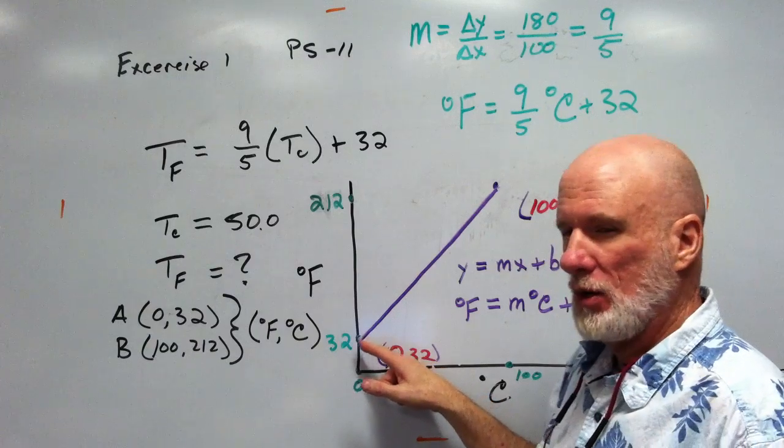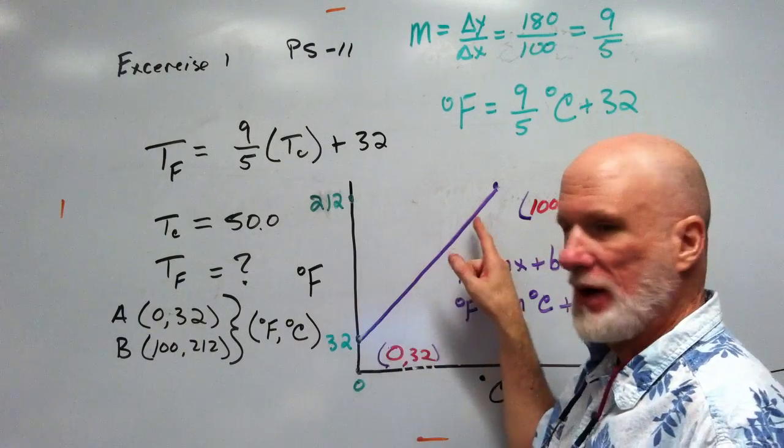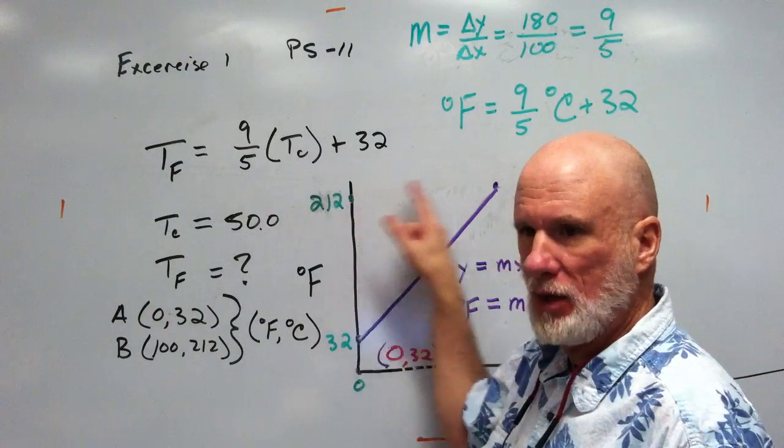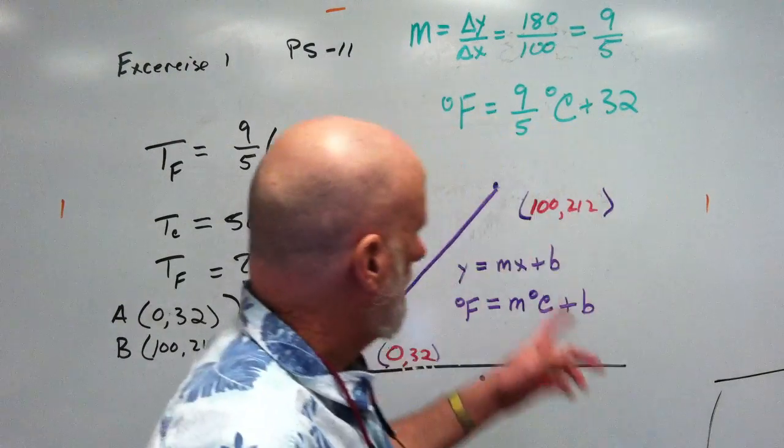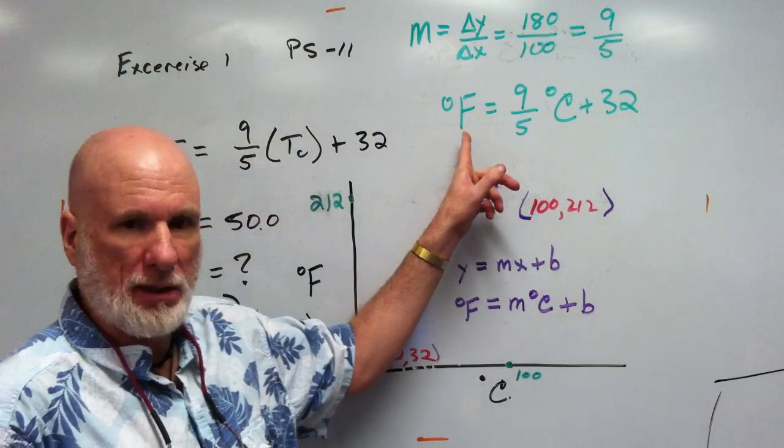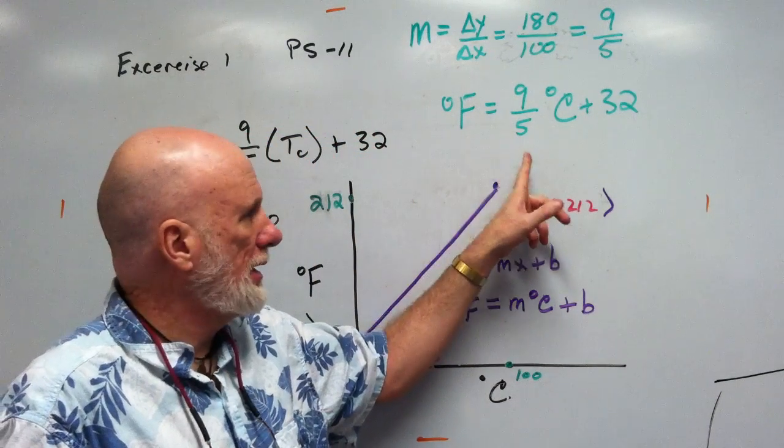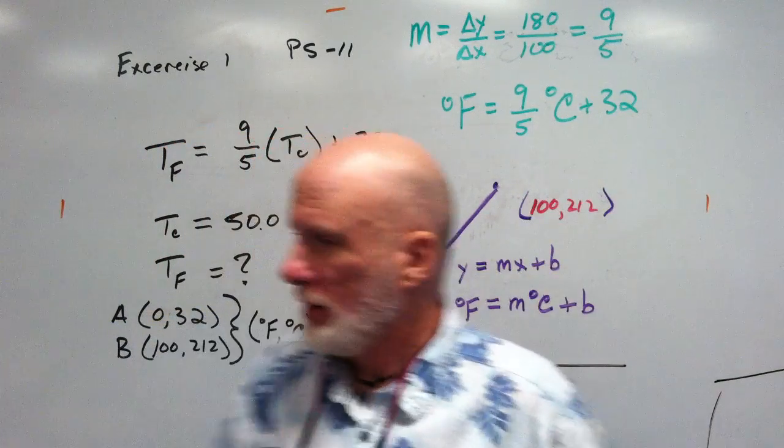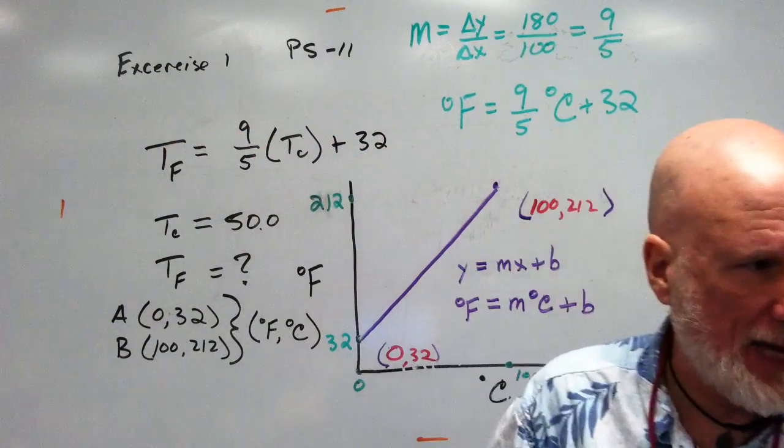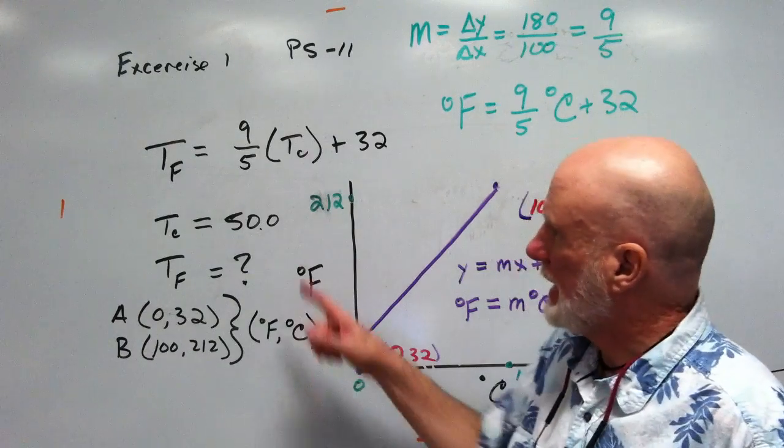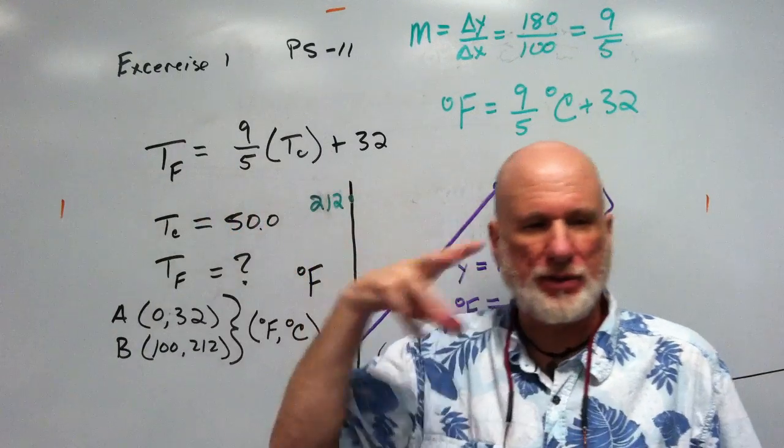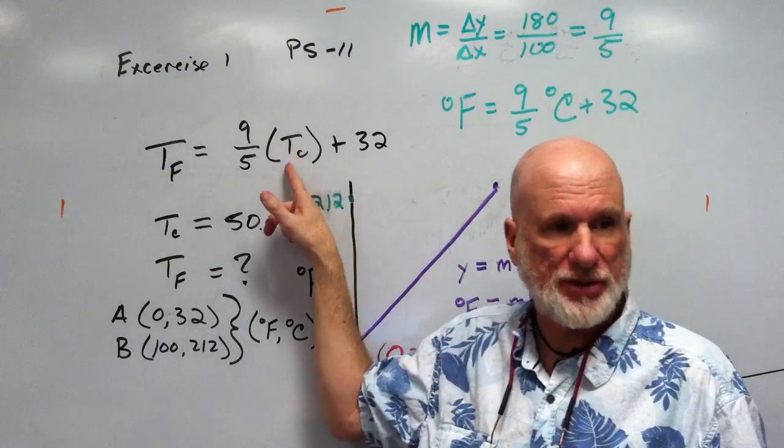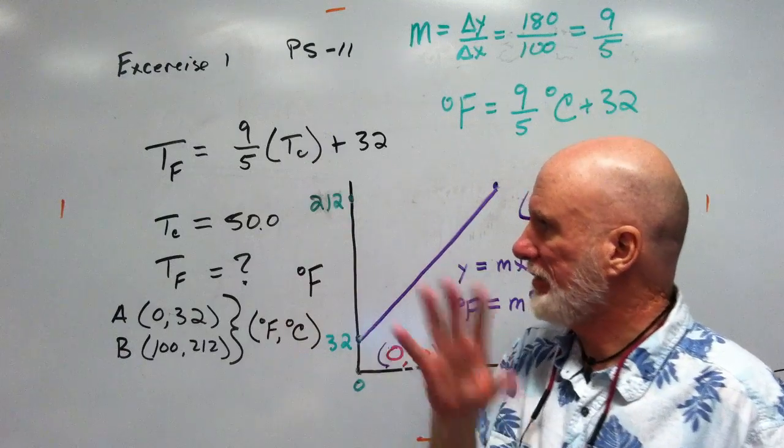So up 9 over 5. Up 180 over 100. Same thing. Clear? So the equation is going to be degrees Fahrenheit equals nine-fifths degrees Celsius plus 32. The problem set 11 says this: instead of saying degrees Fahrenheit, they say temperature sub F Fahrenheit equals nine-fifths the temperature in Celsius plus 32. Same thing.